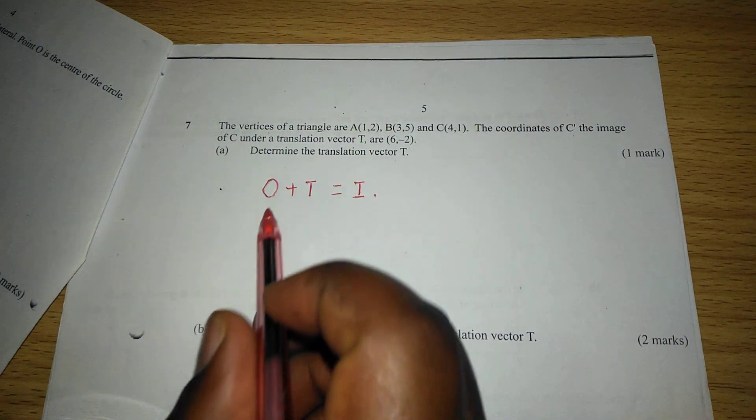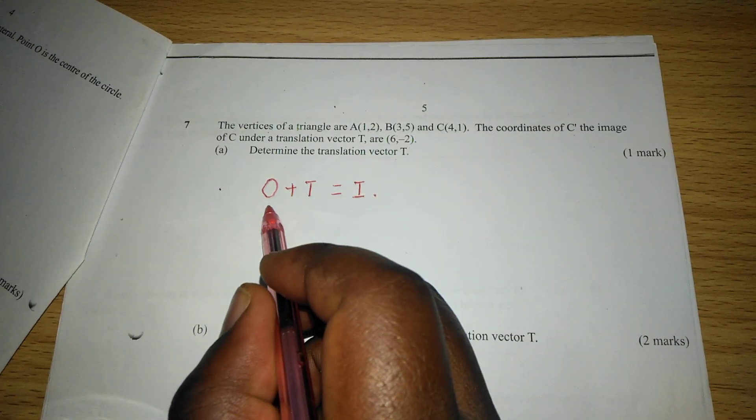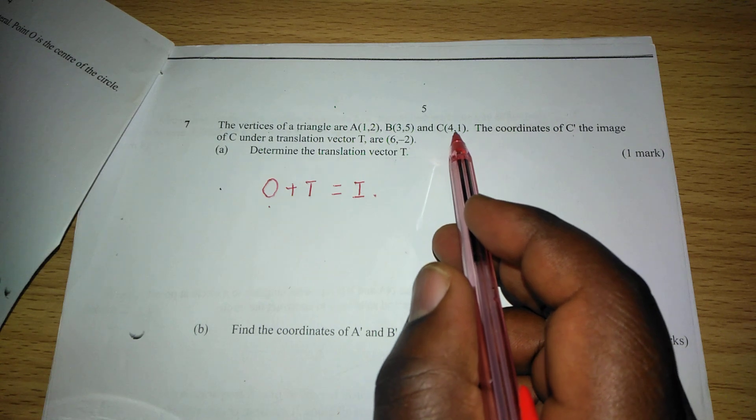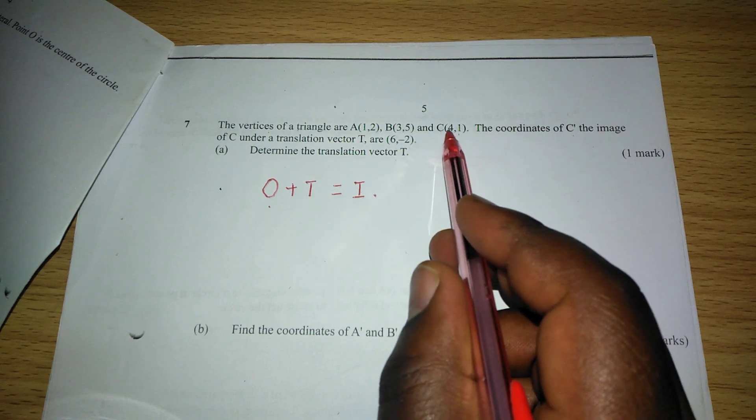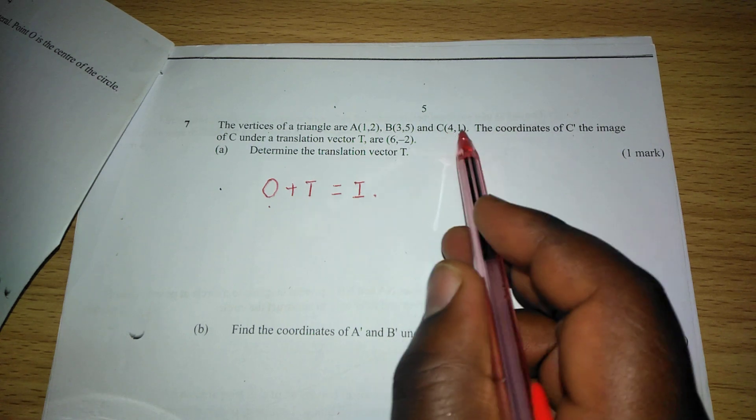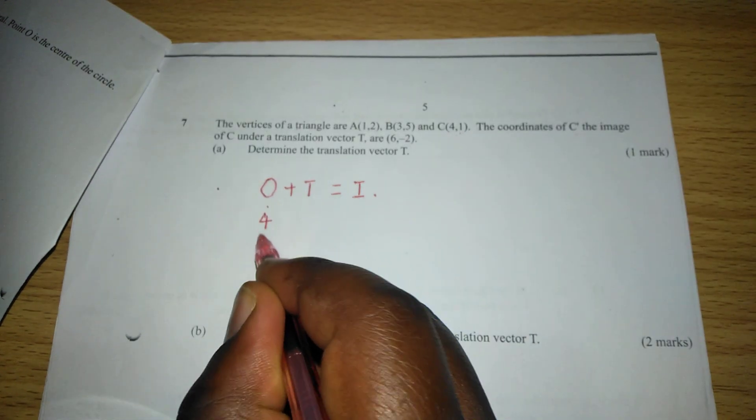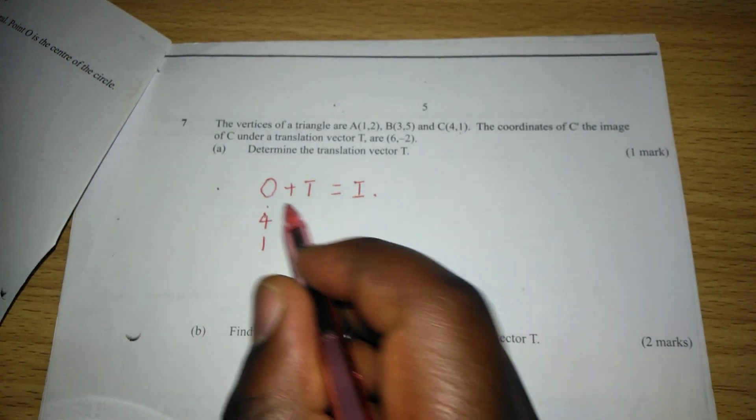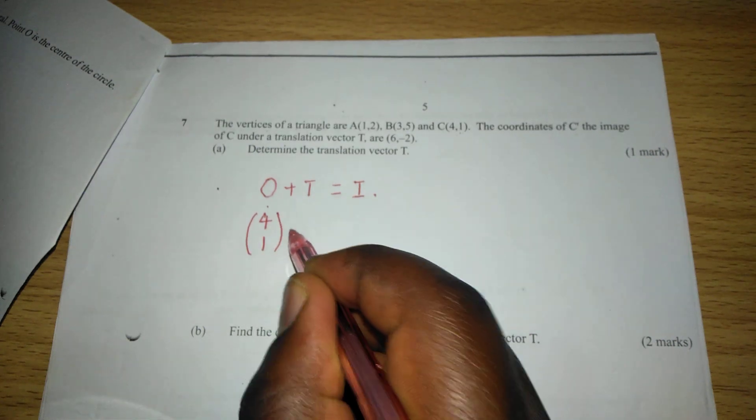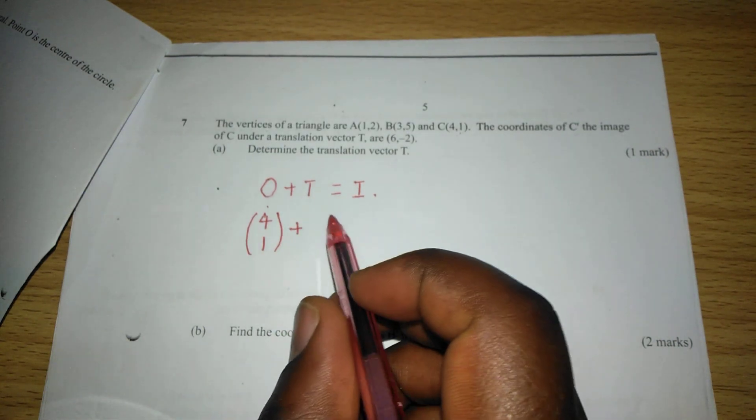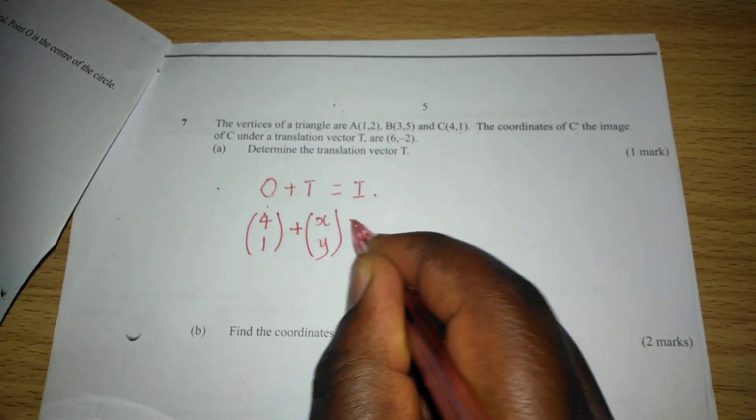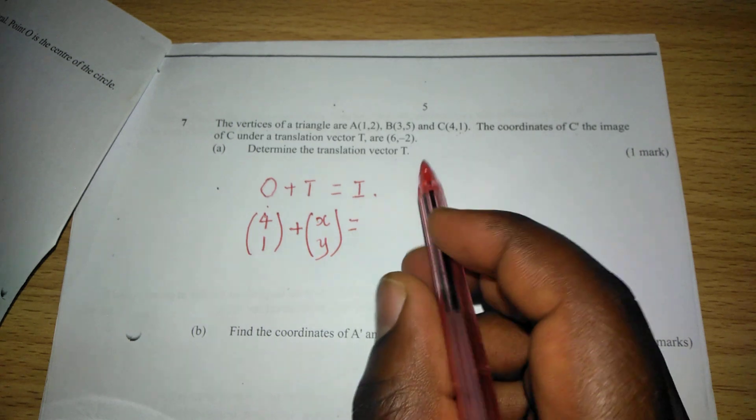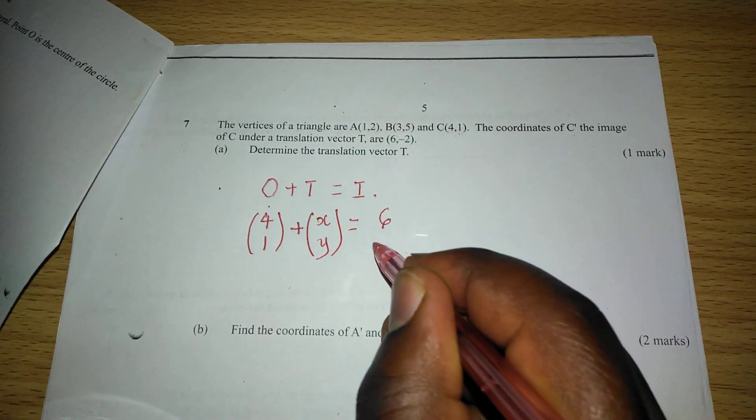Therefore, we can have the object which is C, and we take the coordinates of C written in column vector form, such that instead of coordinate C being (4,1), we have it as column vector (4,1). Then we add it to the unknown translation vector, let it be (x,y). Then this should give us the image of C, which is (6,-2).